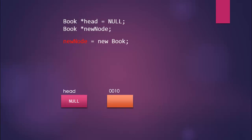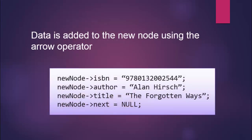When we add data to a dynamic data structure, we use the arrow operator. If you remember working with static structures, you used the dot operator — for example, new_node.ISBN. When working with dynamic data structures, you use the arrow operator, which is a dash followed by the greater-than symbol. So: new_node->ISBN, new_node->author, and so on. This is how we fill the payload of our new node.